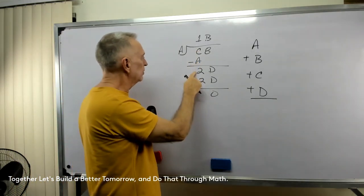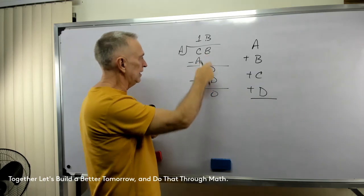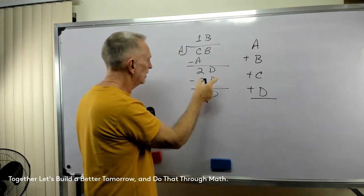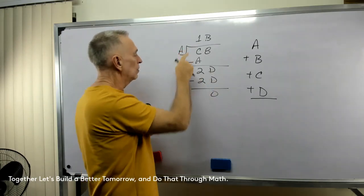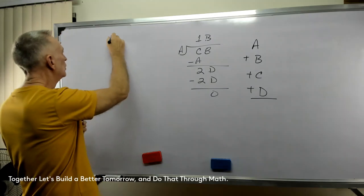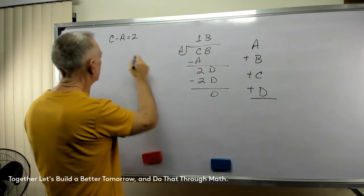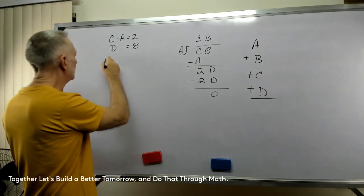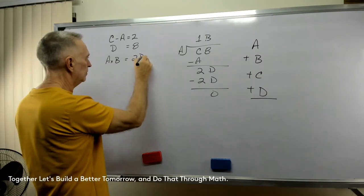Now, if we had numbers here, then we would say: bring the 8 down. But it's a D, so D must equal 8. Now then, B times A would equal this number. Well, this number is 2D. D is 8, so now we have a few items that we know: C minus A equals 2, D equals 8, and A times B equals 2D, which equals 28.